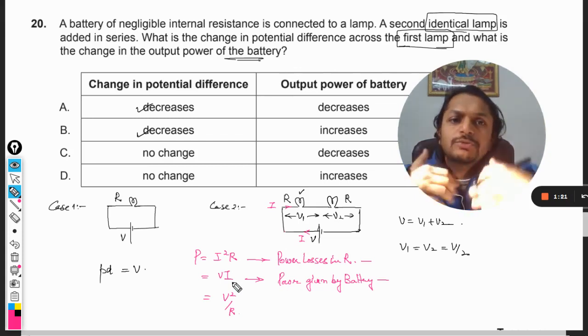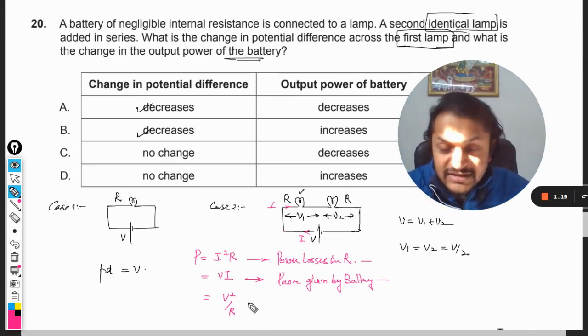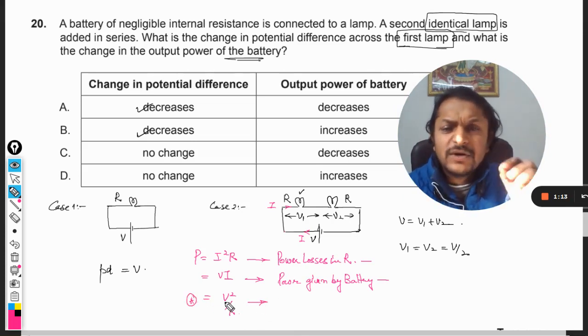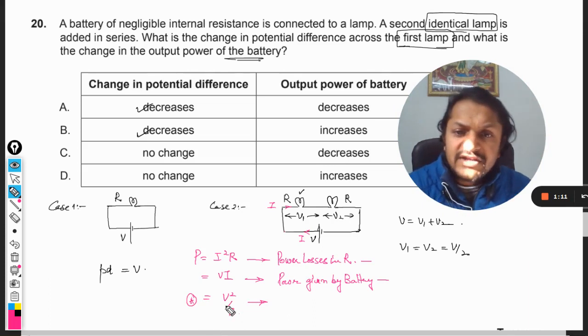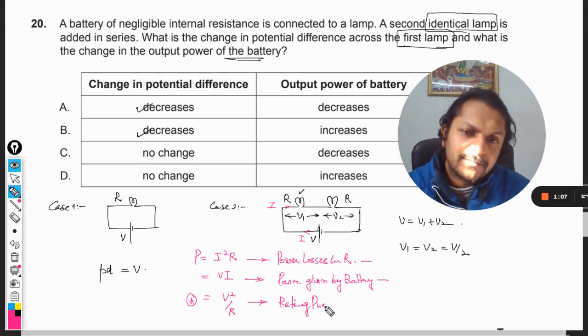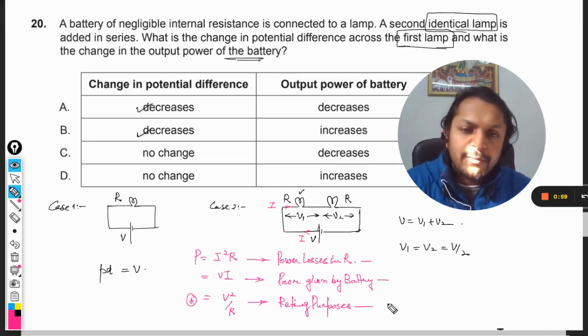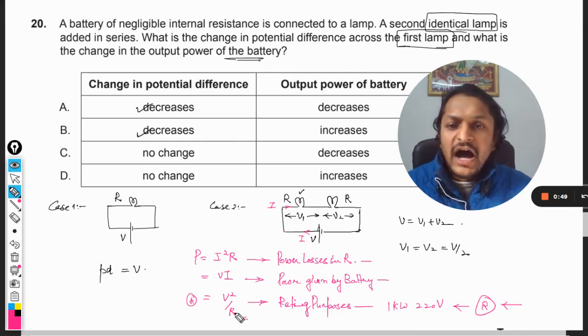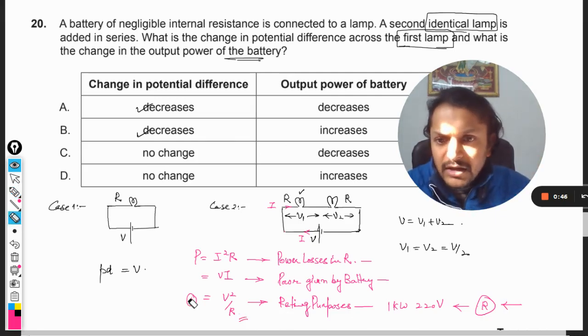Now there is another formula which is rarely used, and that is V square by R. This is generally used for rating purposes. It is given that you bought an electric equipment that is working at one kilowatt, 220 volt or 110 volt or something, and from here you want to find the resistance. You can use this formula R equals V square by P.